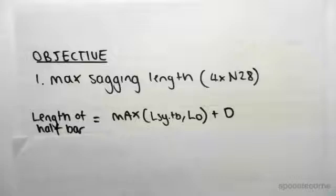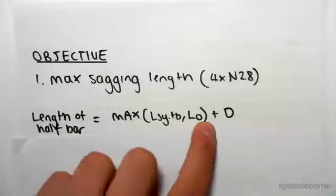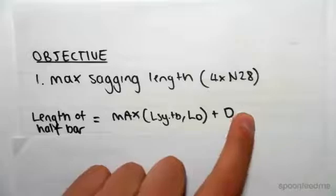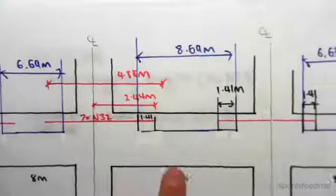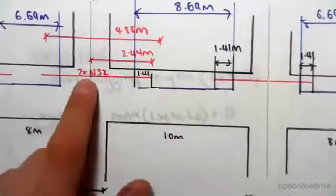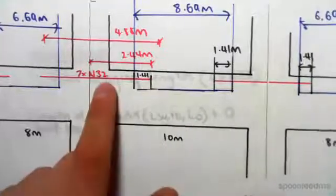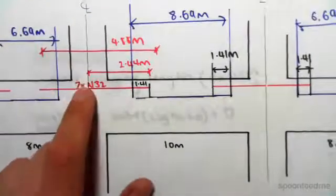Now for the sagging case it is the max of Lsy.tb, L0 plus D. For the hogging case we had plus the column on 2. We don't have that for this case here because we're starting at mid-span, we're not starting at the column.